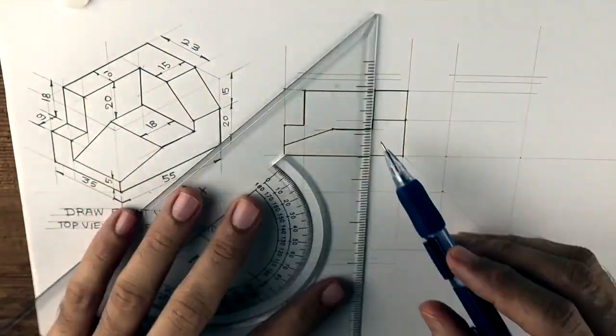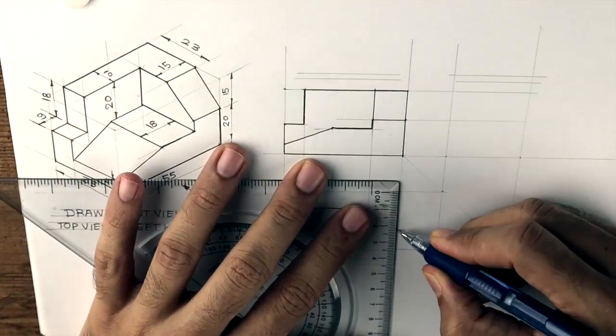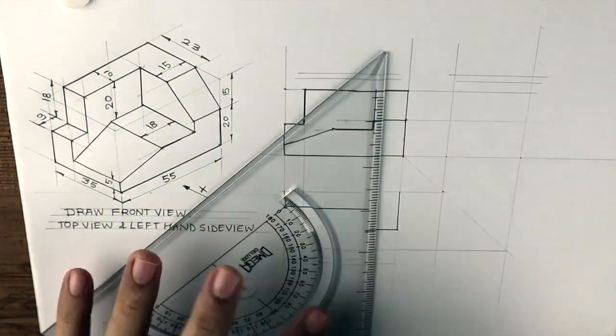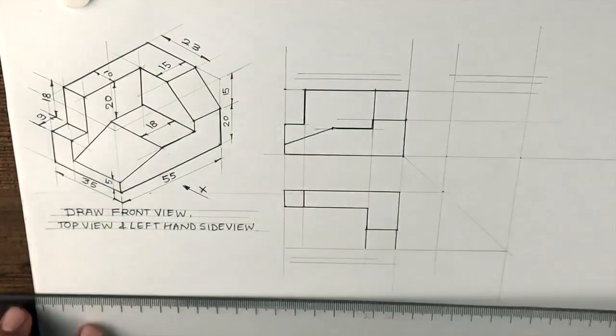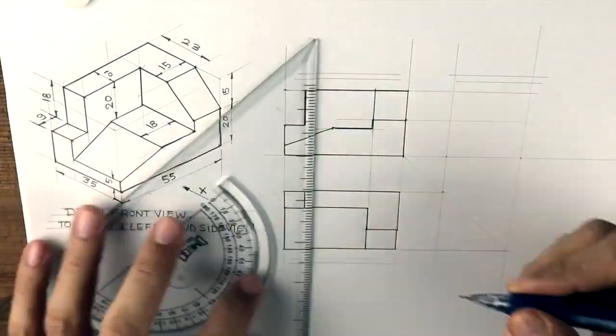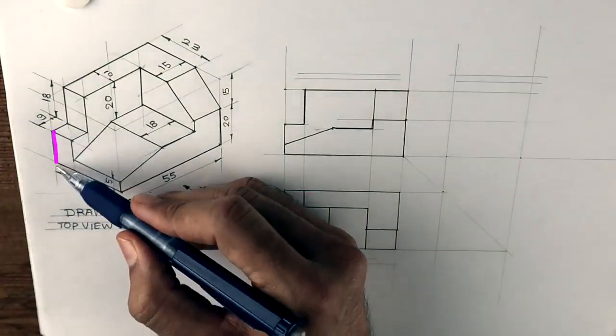So we'll project one by one. We'll draw that L shape first, see that 23, and we'll draw a small rectangle and that slope, and we'll draw a vertical line from here. So we'll get the required top view.